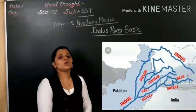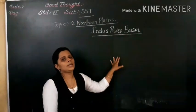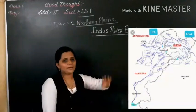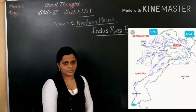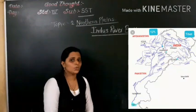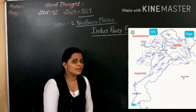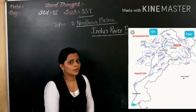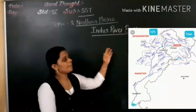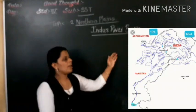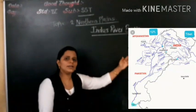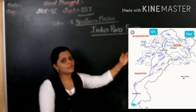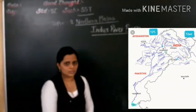Most of the Indus river lies in India and Pakistan. So where does this Indus river lie? In India and Pakistan. And only 30 percent of it is in Tibet and Afghanistan.